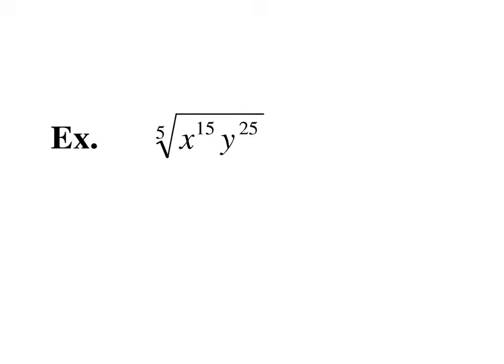The index this time is 5, so we're going to divide the exponents by 5. 15 divided by 5 is 3. 25 divided by 5 is 5.